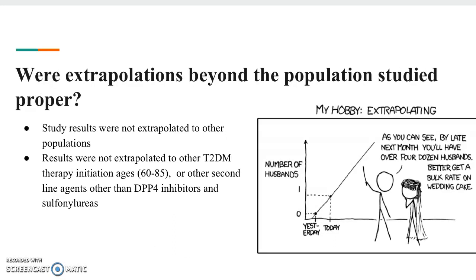Were extrapolations beyond the population studied proper? The study results were not extrapolated to other populations — not to other age groups outside of 60 to 85 years, nor to other second-line agents other than DPP-4 inhibitors and sulfonylureas.